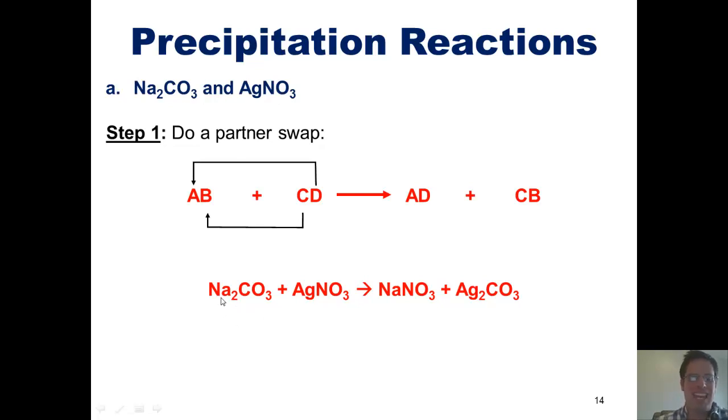Sodium is the cation A in this example, and nitrate, NO3, is the anion D. So I'm going to get sodium and nitrate together like this. Silver is our cation C in this example. Carbonate, CO3, is the anion B. Hence, silver and carbonate are going to get together to form silver carbonate.